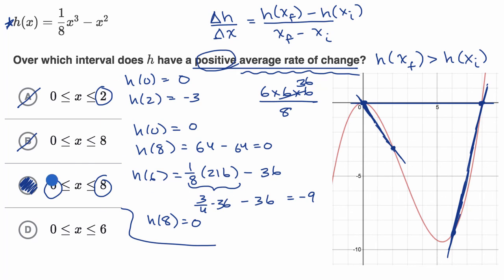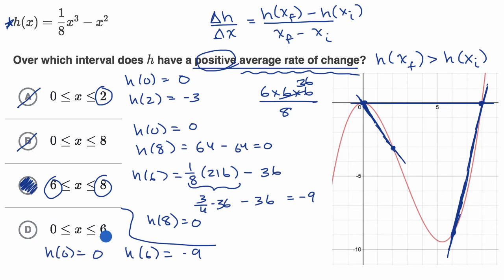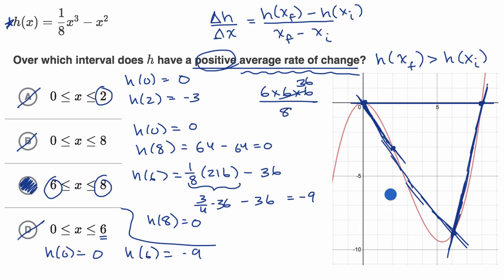If we were just doing this on our own, we'd be done. But we can check the last choice. h of zero we already know is zero, and h of six we already know is negative nine. So this is a negative average rate of change, because at the higher endpoint we have a lower value of our function. We'd rule this out — going from x equals zero to x equals six, the line connecting those points clearly has a negative slope.